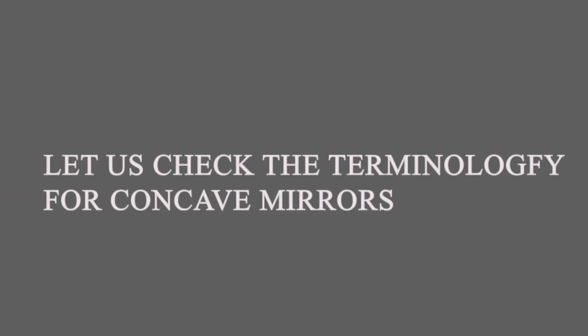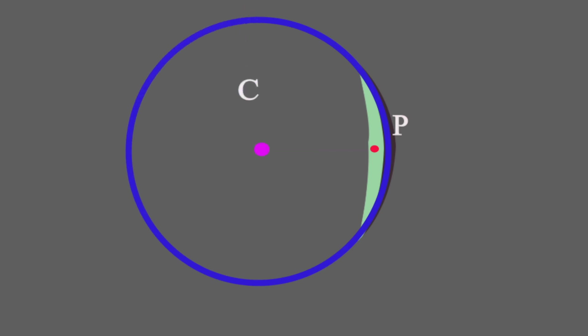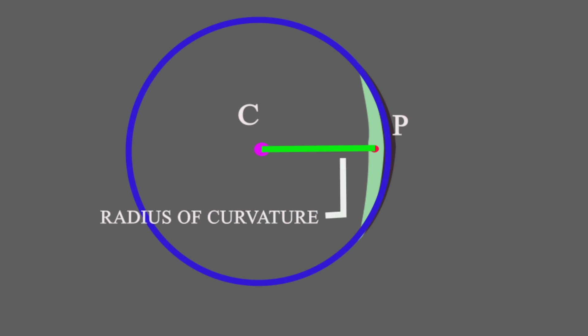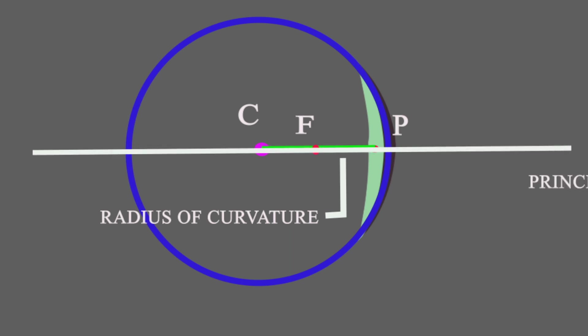Now let's check the terminology for concave mirrors. In the same way as for convex mirrors, the middle point of the reflecting surface is the pole P. It is part of a sphere, and the center of that sphere is the center of curvature, denoted as C. The radius of the sphere is known as the radius of curvature. The middle point between the center and the pole is the focal point, denoted by F. The main axis going through the center, focal point, and pole is known as the principal axis.